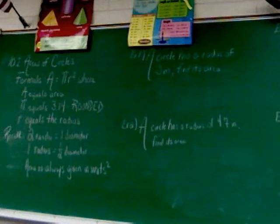Circumference for a circle, remember, is the perimeter of a circle. Formula for area of a circle: A equals pi r squared, where A equals the area.